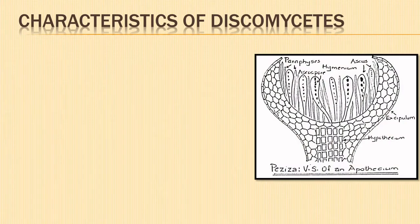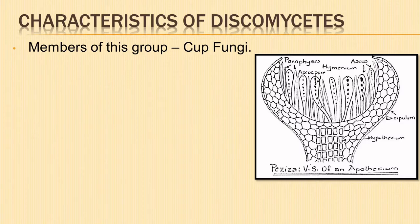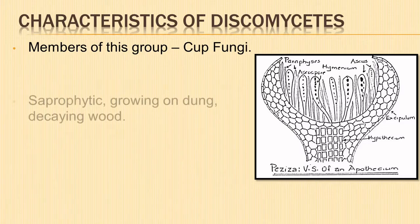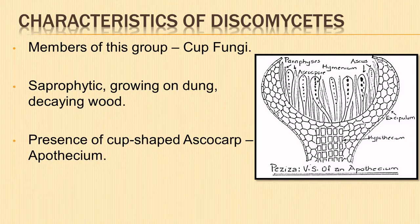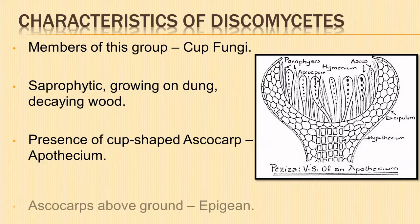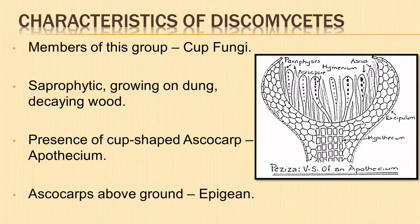Let us start with the general characteristics of Discomycetes. Members of this group are called the Cup Fungi. The Discomycetes are saprophytic, which grow on dung, decaying or burnt wood, or on richly manured soil. They show the presence of cup or saucer-shaped fleshy ascocarp known as apothecium. In most of the Discomycetes, the ascocarps are above ground.